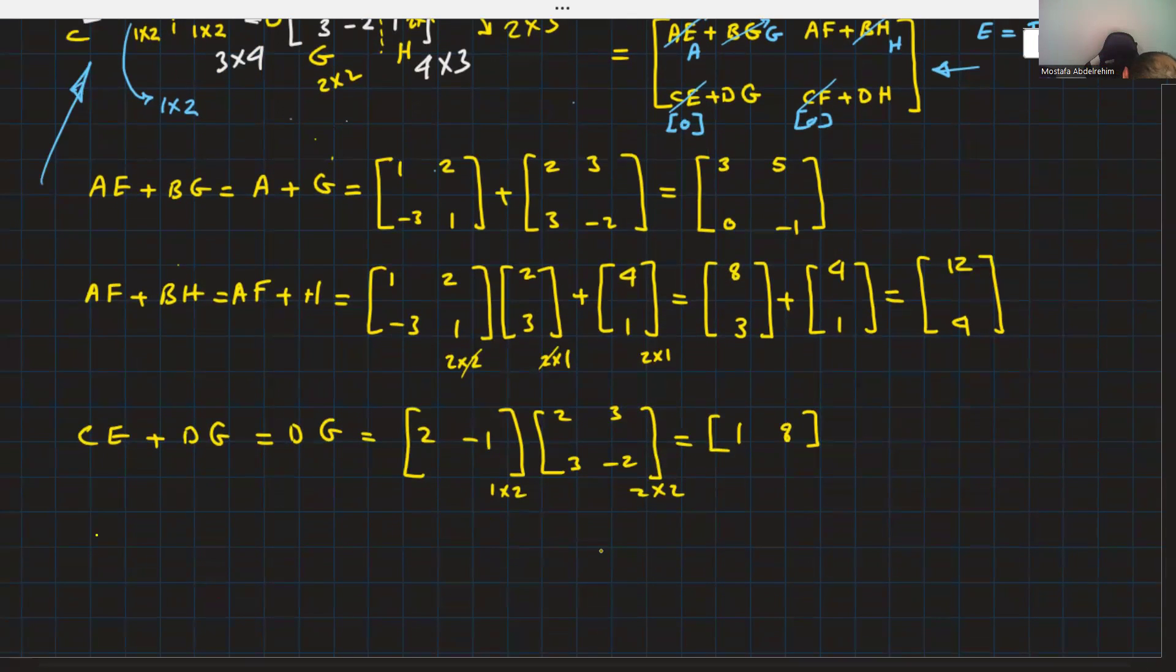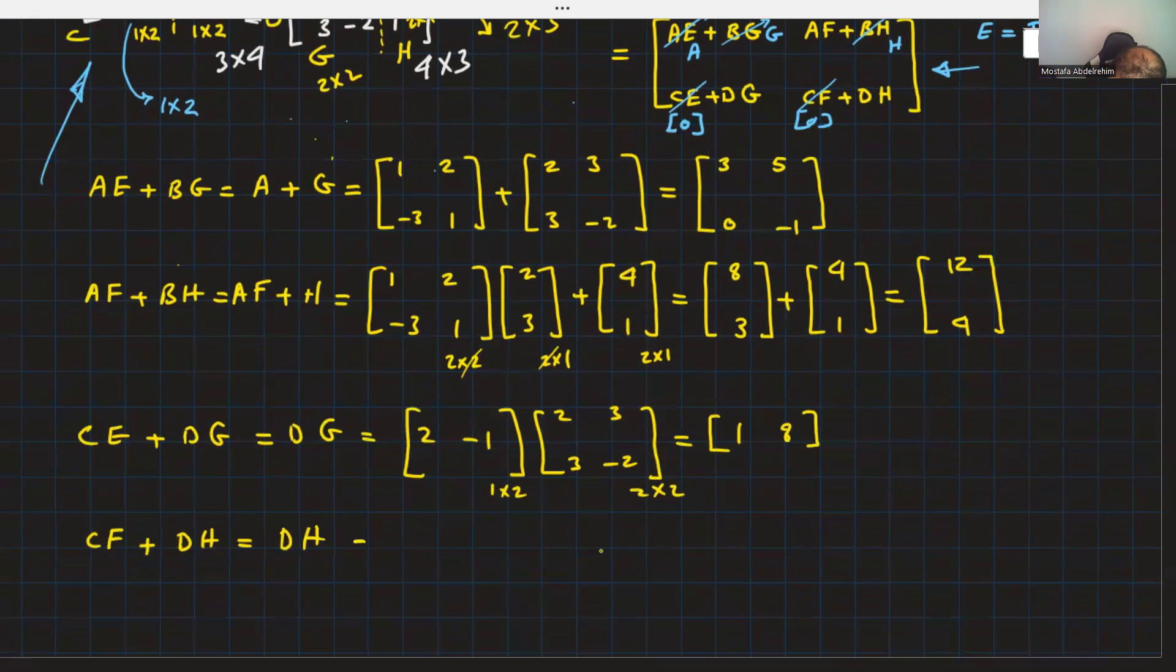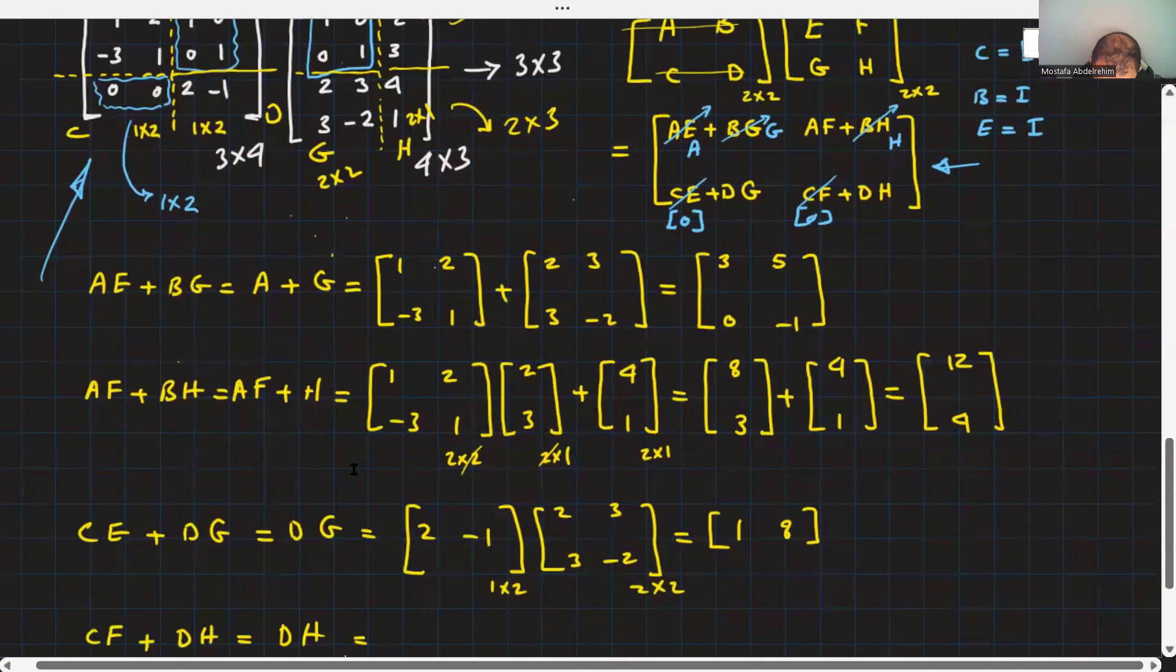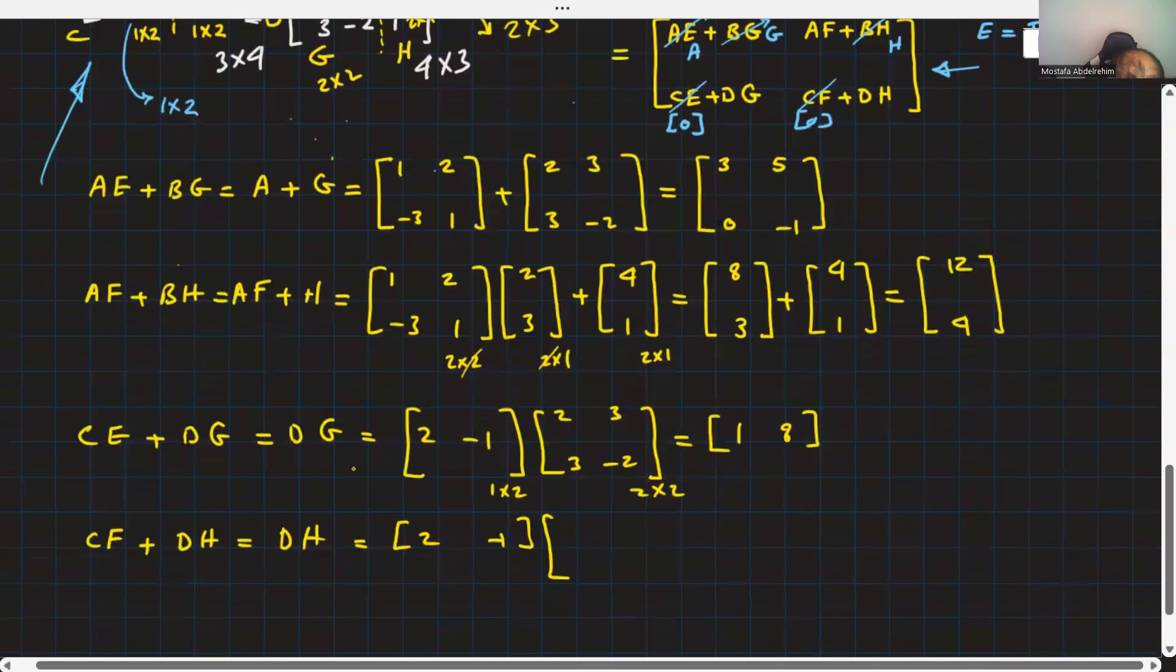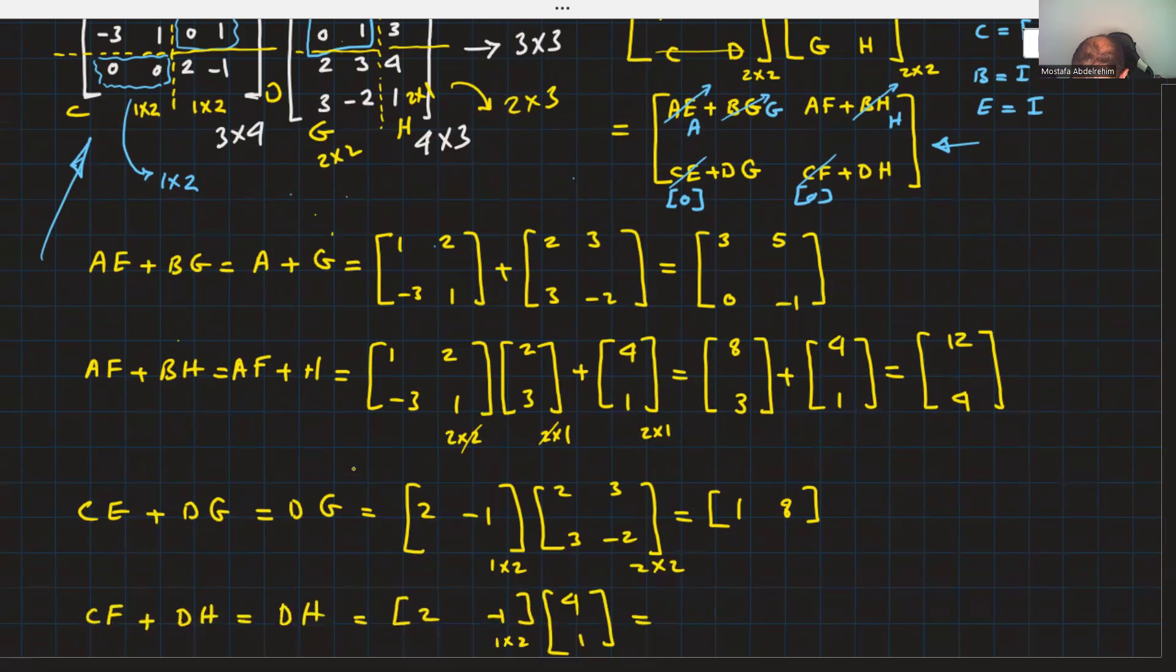Finally, CF plus DH. CF is 0, so it should be just DH. D is 2 minus 1. H is 4, 1. That's 1 by 2. That's 2 by 1. This will give us 1 by 1, just a scalar. So, this is 8 minus 1, that's 7.